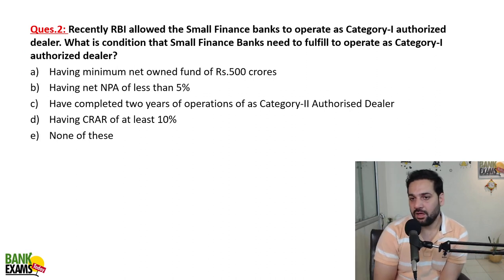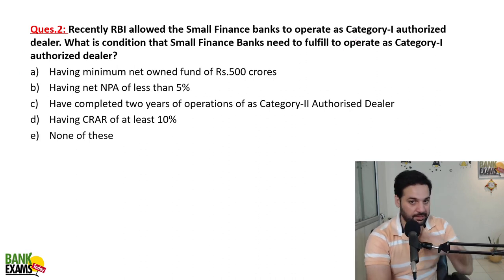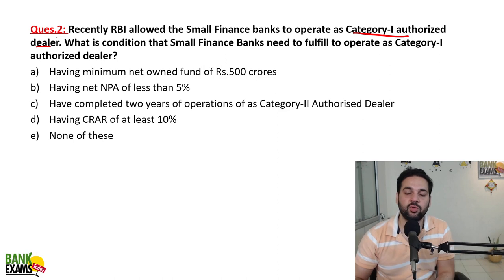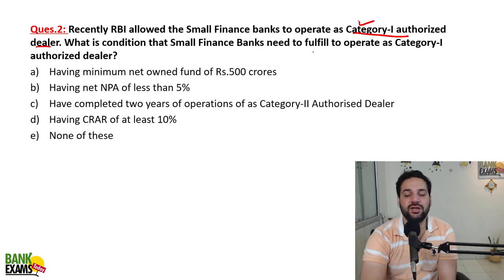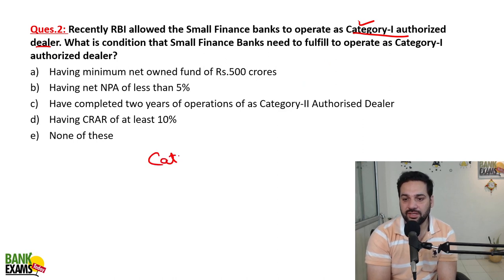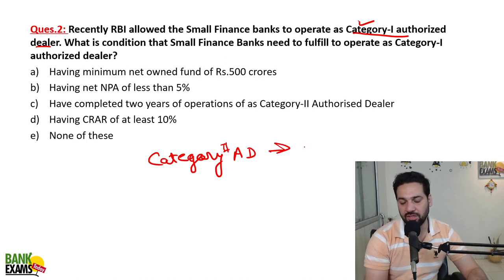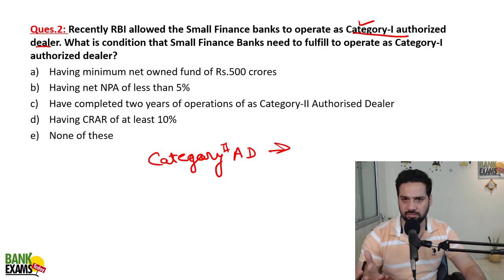Question number two. First you need to understand two things: Category One Authorized Dealer and Category Two Authorized Dealers. You should know the difference between them. Category Two Authorized Dealers — AD2 — are authorized to do money exchange activities: converting dollars into rupees. They can provide currency exchange services.